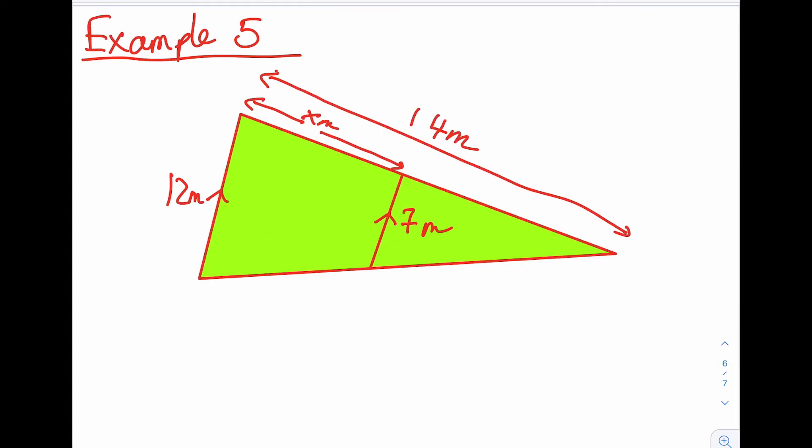Example 5. Again, very similar. You've got these little arrows that tell you you've got two similar triangles. So you've got a big triangle and your little triangle. I would always draw these out at this stage.